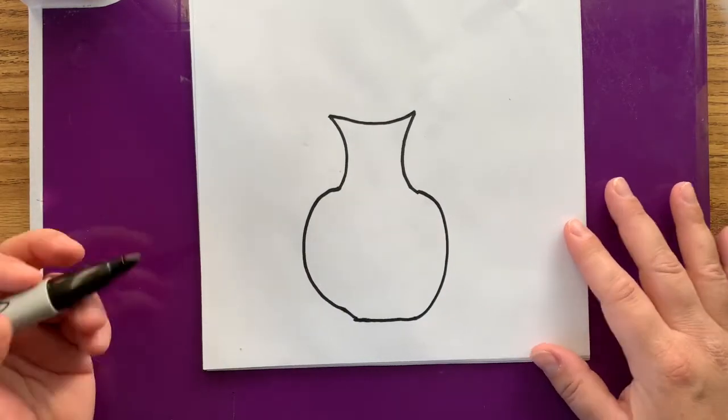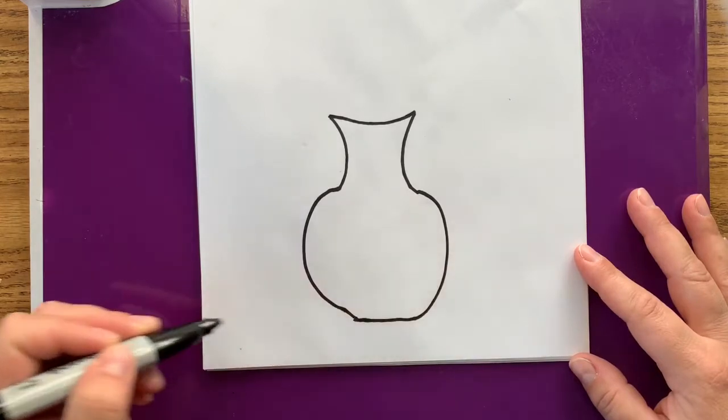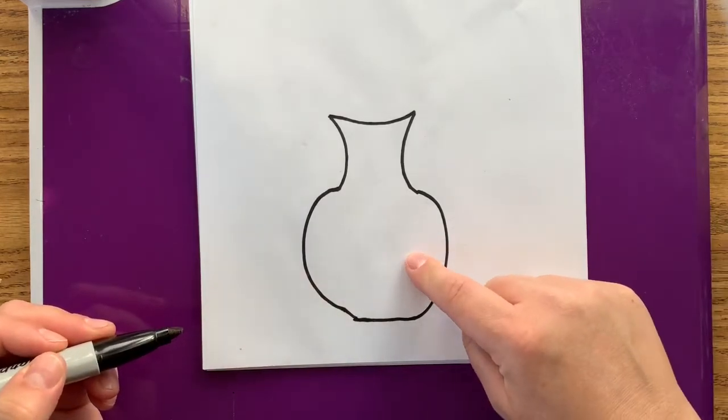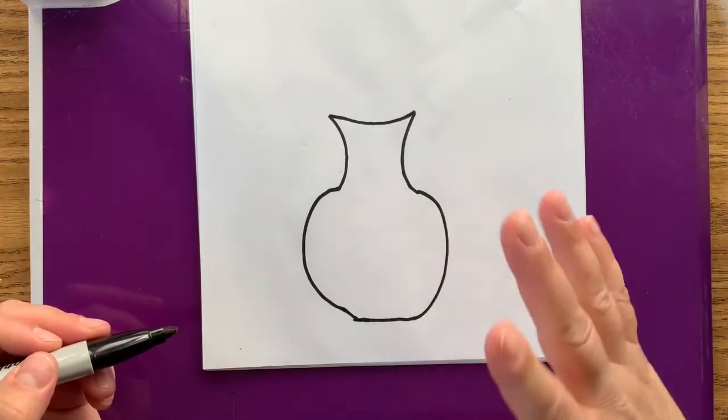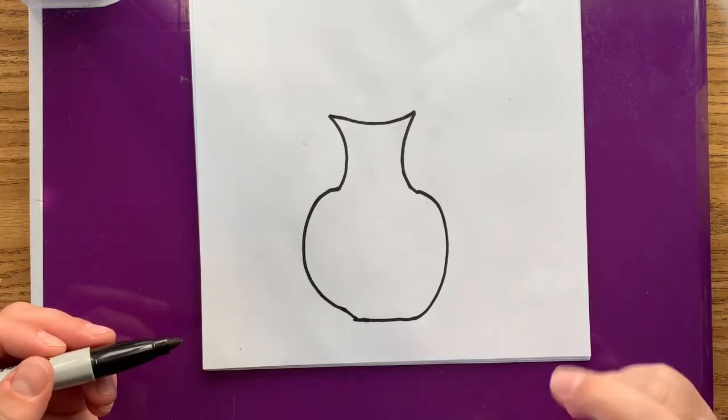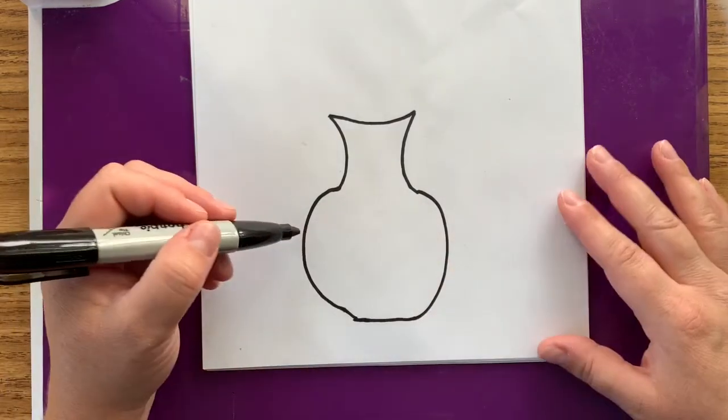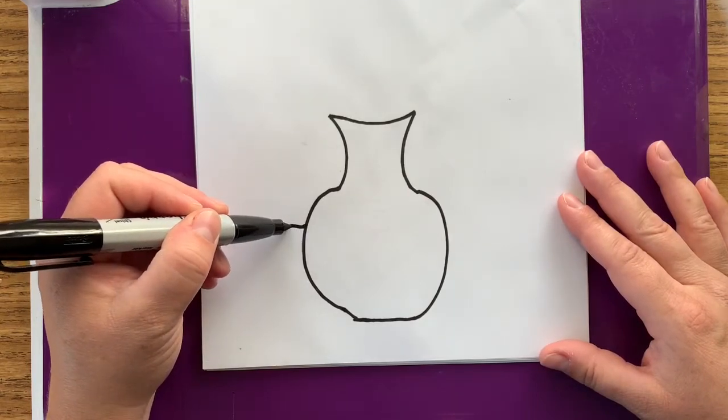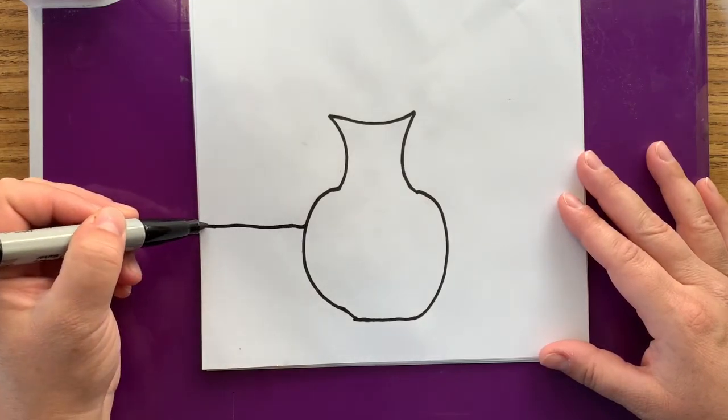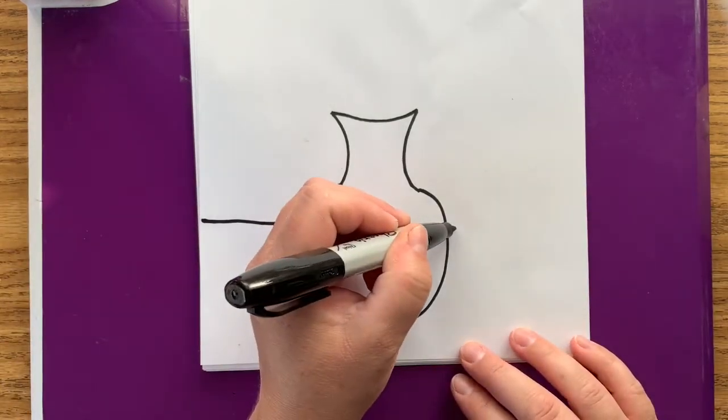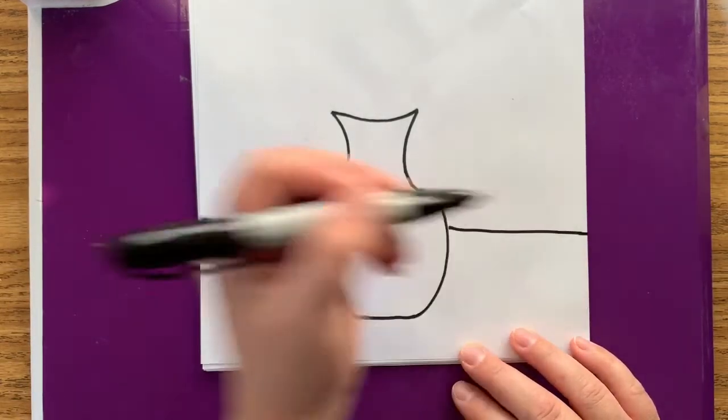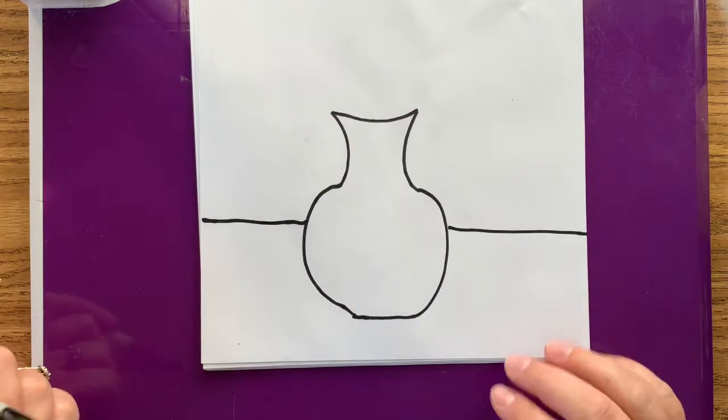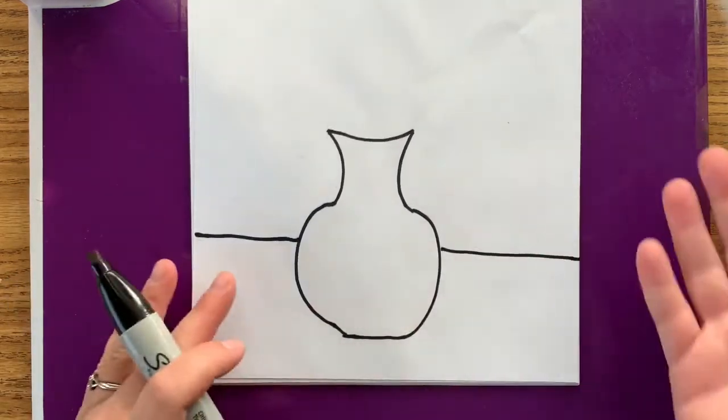Okay. Now we're going to draw the table. We don't want to draw the table on the very bottom, because then it almost makes it look like the vase is sitting on the edge, which can cause some tension in your artwork. It might feel like it's about to fall off. So we're going to go about halfway up our base, and we're going to draw a line from the left side of the vase over to the left side of the paper. And then from the right side of the vase to the right edge of the paper. Okay. And that's it. That's your vase.